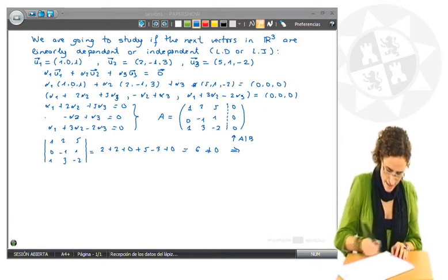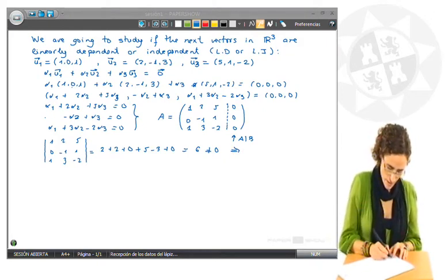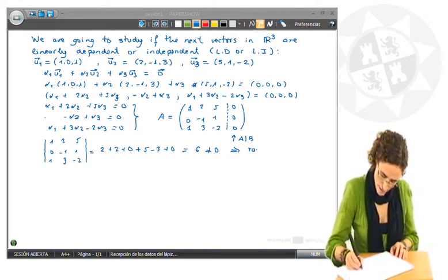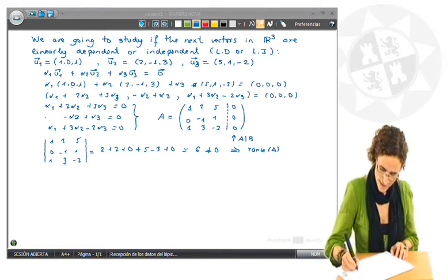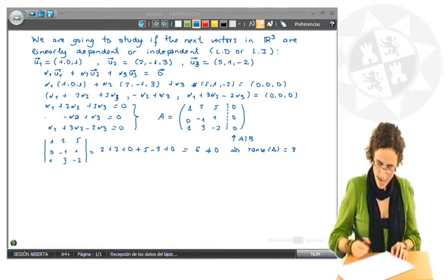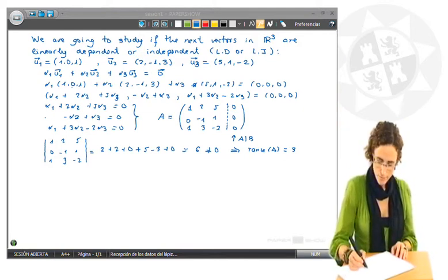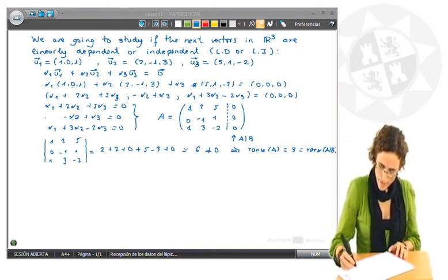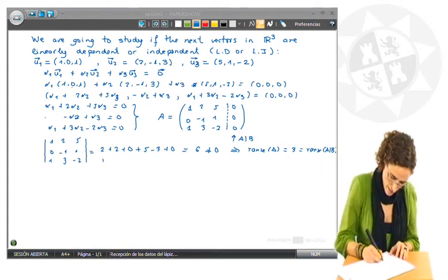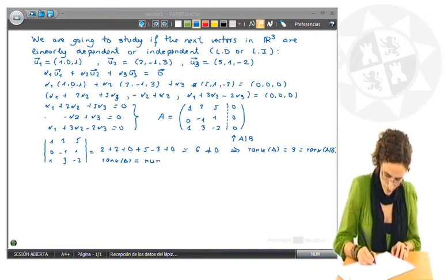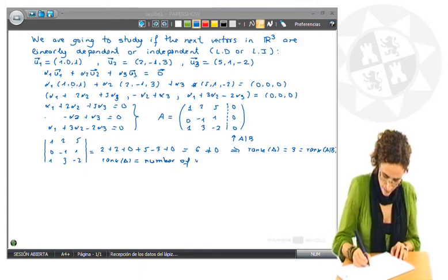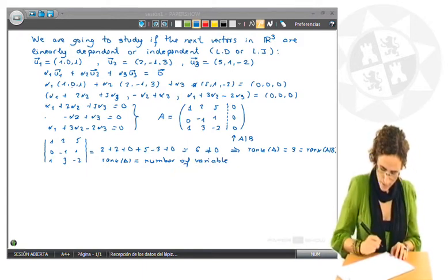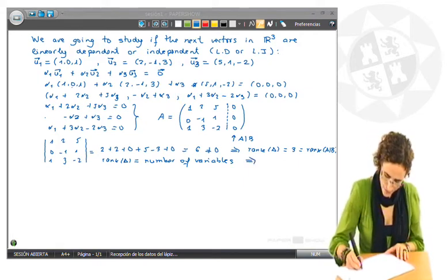So as the size of this determinant is 3, because it has 3 rows and 3 columns, rank of matrix A is 3. As the extended matrix has only a column formed by zeros, we can say that rank of A bar B is also 3. And this number coincides,